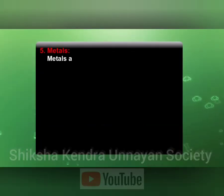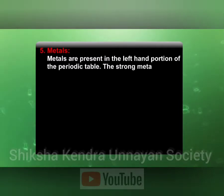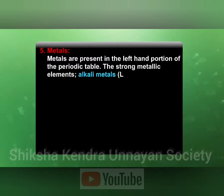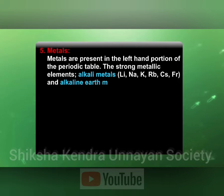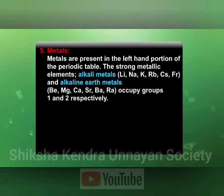Metals: metals are placed in the left-hand portion of the periodic table. The strong metallic elements — alkali metals like lithium, sodium, potassium, rubidium, cesium, francium — and alkaline earth metals — beryllium, magnesium, calcium, strontium, barium, radium — occupy groups 1 and 2 respectively.